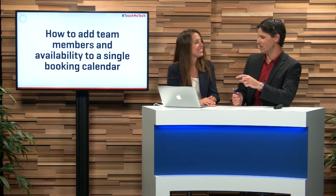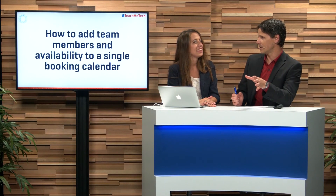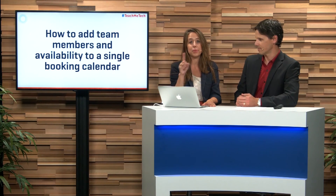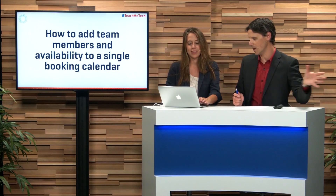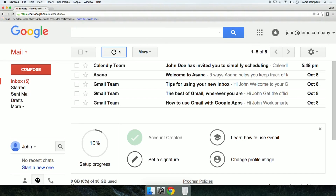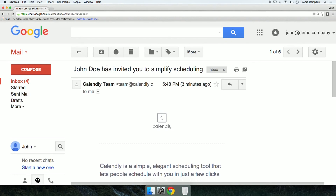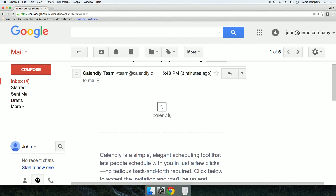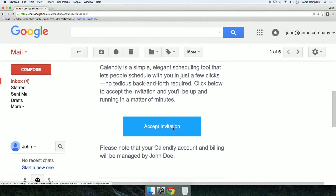So when you ask someone else to join the calendar, it automatically adds their availability? Yes, that's right. It will automatically add their availability once they set up the account — done exactly the same way as we set up your account in the first video. Link it to their Google Calendar and their availability will be automatically pulled in. We can see here that we're logged in as john@demo.company and he's already received an email from the Calendly team inviting him to simplify his scheduling.